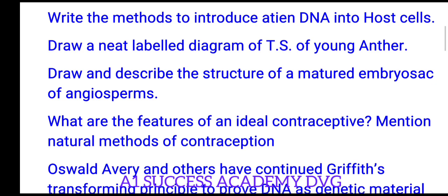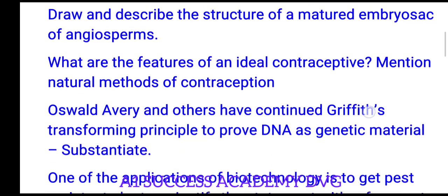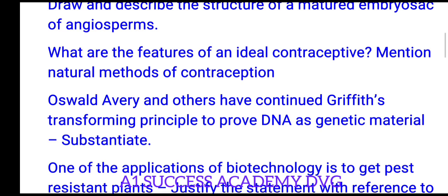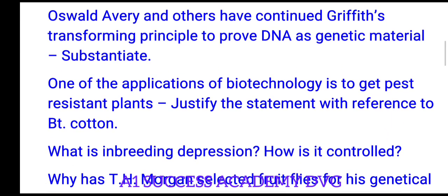These important questions will help you score at least 25 to 30 marks in the annual exam. What are the features of an ideal contraceptive? Mention natural methods of contraception. Elaborate on Griffith's transforming principle experiment to prove DNA as genetic material.